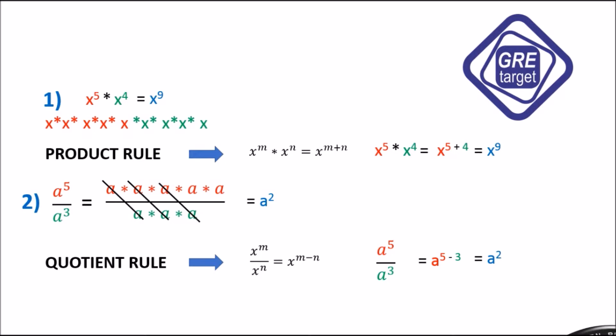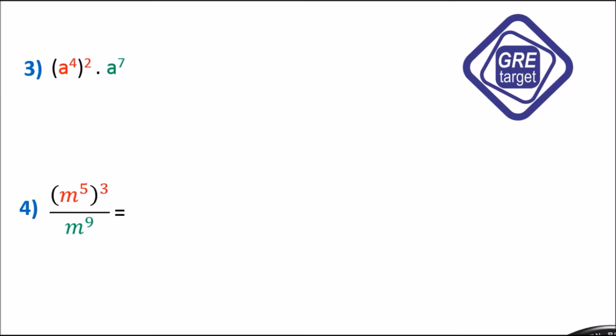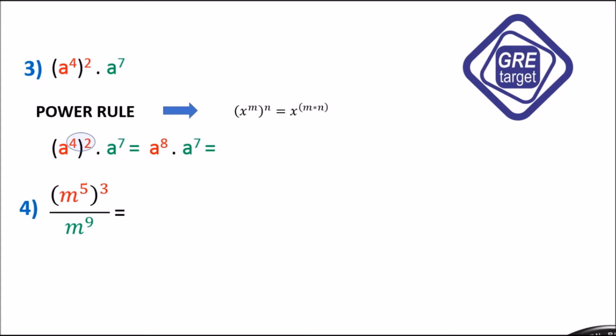Example 3: a raised to 4, the whole raised to 2, multiplied by a raised to 7. Using the power rule on the first term, we multiply the exponents: 4 times 2 gives a raised to 8. Then applying the product rule to a raised to 8 times a raised to 7, we add the exponents: 8 plus 7 equals 15. So the answer is a raised to 15.